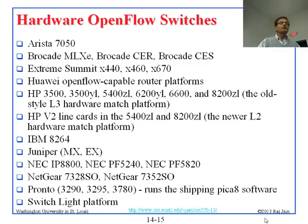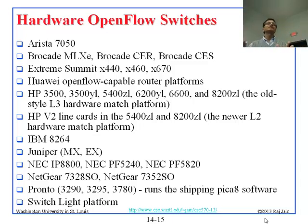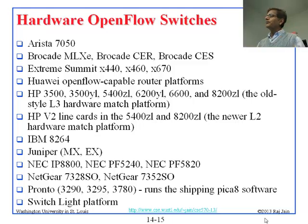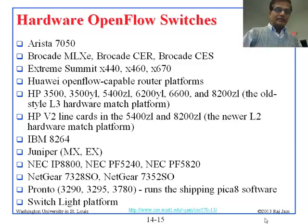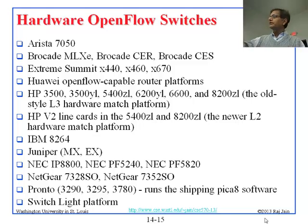OpenFlow 1.0 was a big success, implemented by many companies including HP, Extreme, Brocade, IBM, Juniper, NEC, Netgear, Pronto, and others. Most of these implementations used merchant silicon — Broadcom chips were used in many of these switches.